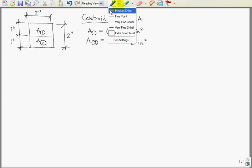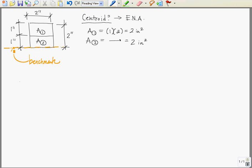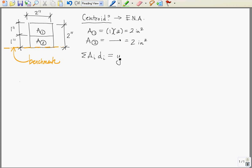Now, in order to find the centroid, we want to establish a benchmark line. So we're going to use the bottom of the cross section as our benchmark. And our equation is that the sum of the areas times the distances to the benchmark is equal to y bar times the total area. Where y bar is defined as distance between bottom of cross section and elastic-neutral axis, a.k.a. centroid.